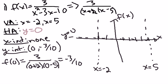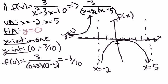So the graph will have a shape like so on the left. We already have a test point — the y-intercept at negative three-tenths, which is about right there. If you do any other test points between negative 2 and positive 5, you'll get points in the positive region. So there is the first problem — let's move on to the second one.